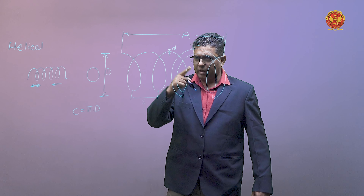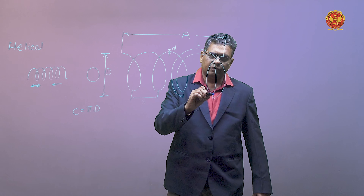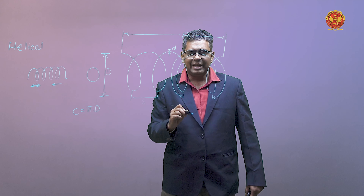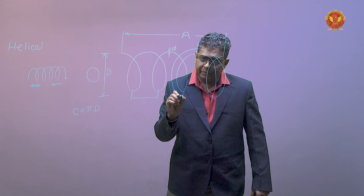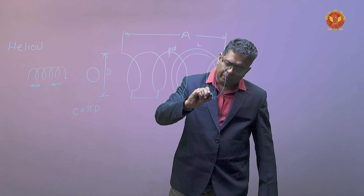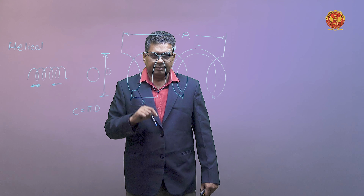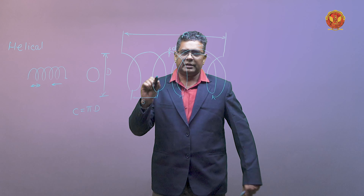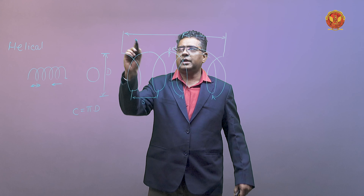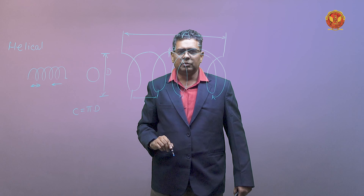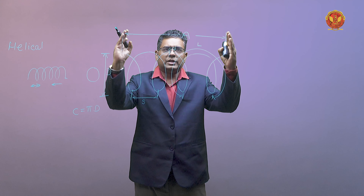Alpha क्या है — alpha है pitch angle। Then what is L — ये L है length of one turn। इस turn के midpoint से अगले turn के midpoint तक जितना wire consume हुआ, उसको हम बोलेंगे L। N है number of turns — हमने कितने turns लपेटे हैं उसको बोलेंगे N। A है उसकी axial length — पूरा antenna जितनी length का है, वो length हो गई A।